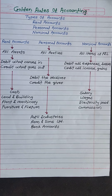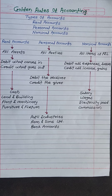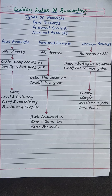The second account is Personal Account. This account contains all parties. The rule for Personal Account is: debit the receiver, credit the giver.